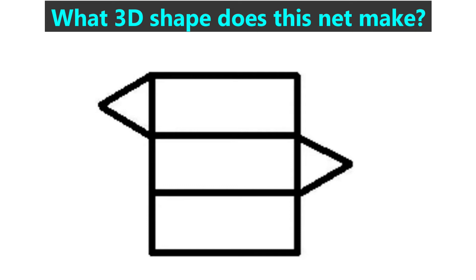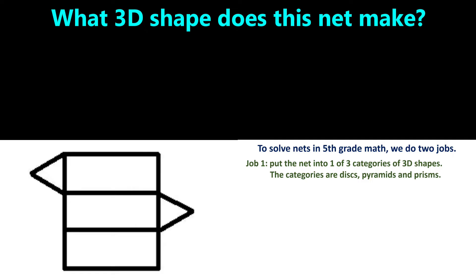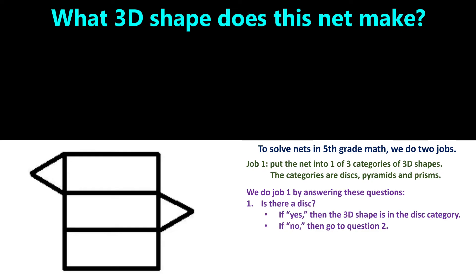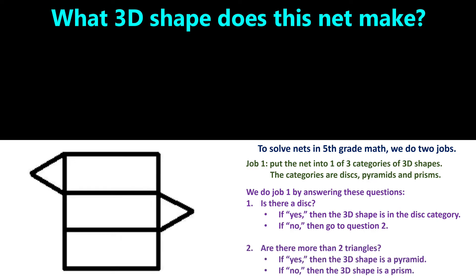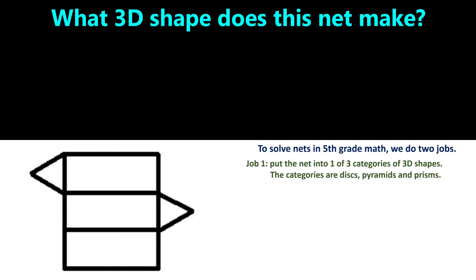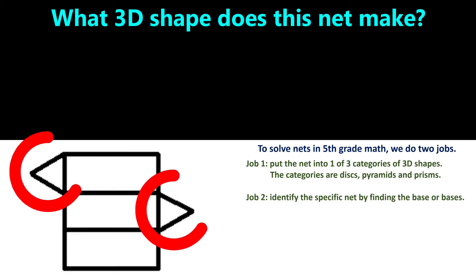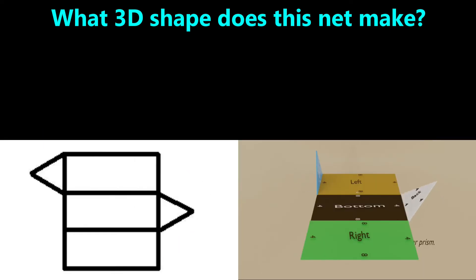Here's another example. Applying Job 1: there is no disk, and we count two triangles, which is not greater than two, so this net goes with a prism. Moving to Job 2, for prisms the bases are the two faces that are different from the other faces — with the exception of cubes where all faces are the same. In this case we find two identical triangles, so this net folds into a triangular prism.